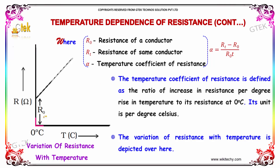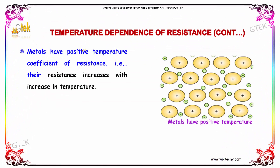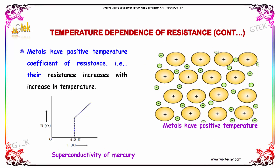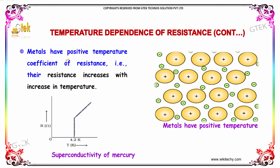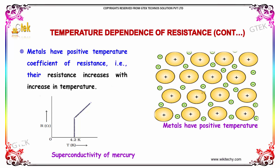You are able to see that at 0 degree Celsius, and afterwards at a particular temperature, it will start increasing. Metals will have a positive temperature coefficient of resistance; therefore, the resistance increases with the increase in temperature.